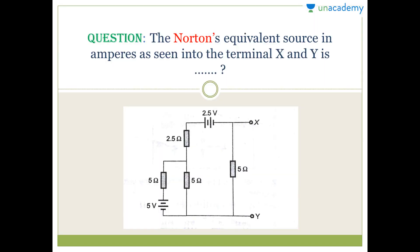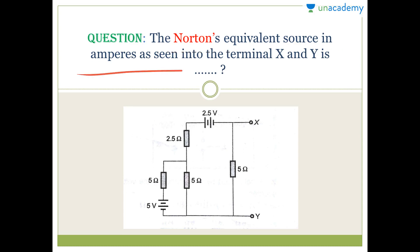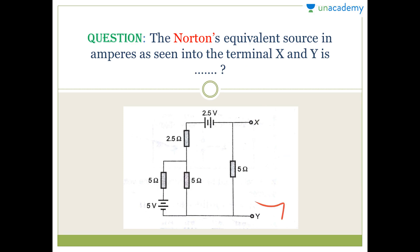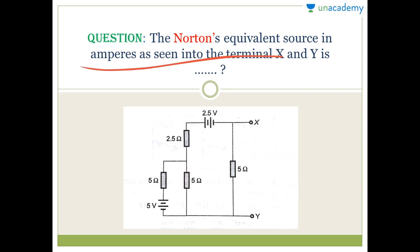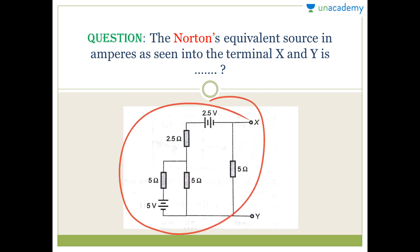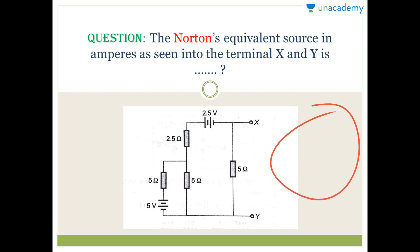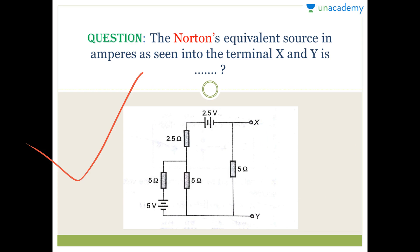First, read the question carefully. The Norton's equivalent source in ampere, basically I_N, as seen into the terminal X and Y — they are asking what is the Norton equivalent current source I_N in ampere as seen into the terminal X and Y. So we will find that value. For that, you should know what is Norton's theorem first.